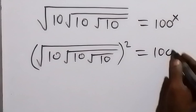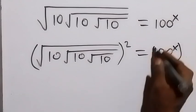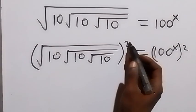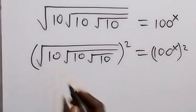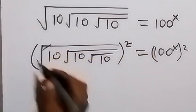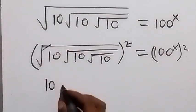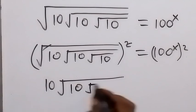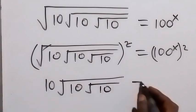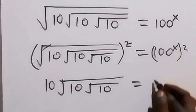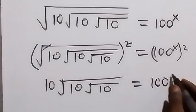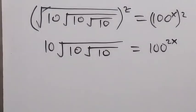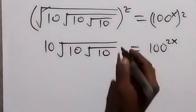100 raised to power x, then square — the square here cancels the first root, and here we have this cancel this, leaving 10 square root of 10, root 10, which equals, when this power multiplies, 100 raised to power 2x. From the law of indices again, we can square both sides.